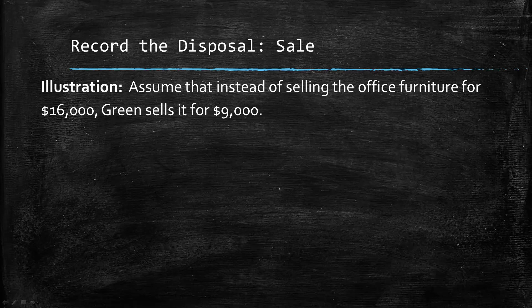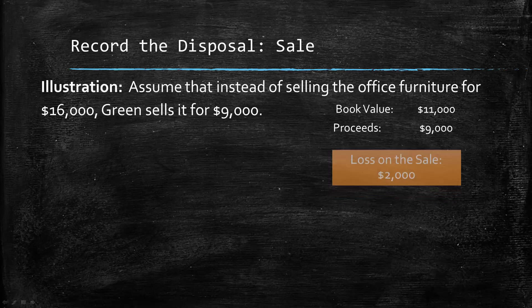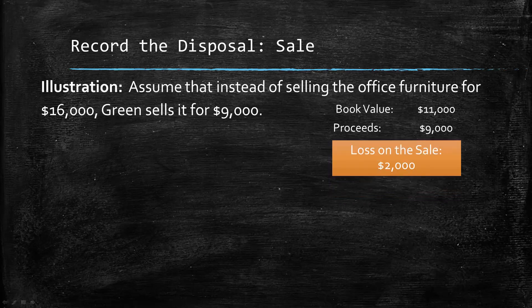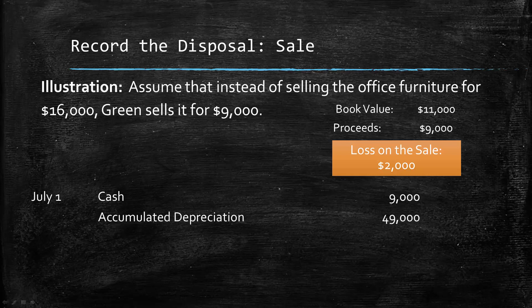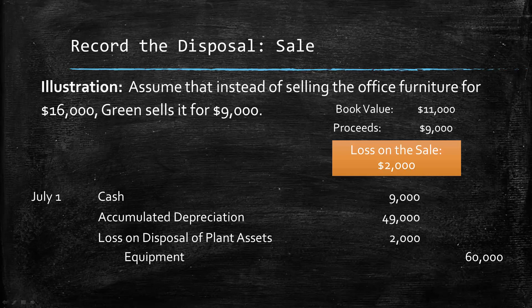What if instead of selling the furniture for $16,000, they only sell it for $9,000? We need to go back and recalculate to see if we have a gain or a loss. Our book value was $11,000, and since our proceeds are only $9,000, we end up with a $2,000 loss on the sale. We're going to debit cash for $9,000, debit accumulated depreciation, and credit the equipment to remove it. We also debit loss on disposal of plant assets for $2,000, because a loss on disposal is an expense.